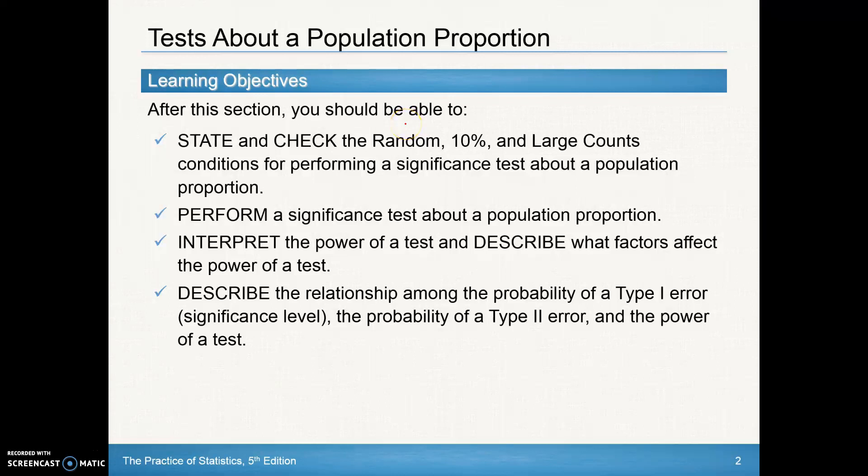Alright, in today's lesson we should be able to state and check the conditions for inference. Remember for random that was our SRS, that was the S part in the second box. The 10 percent condition was our IF check for independence, and that's again where we check for the 10 times our sample size is less than or equal to our population. And then the large counts condition, and that's where we check for normality.